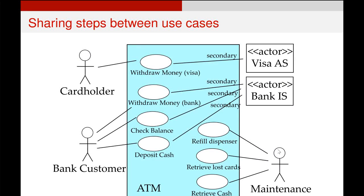The final thing we have to cover about use cases is how you can share steps between use case bodies. If we go back to our example ATM use case diagram, which you can see on the screen now, we can see a few of these steps might share beginning steps. For example, getting a bank customer to check their balance or withdraw money will always have the PIN authentication step, so it doesn't make sense to have those identical steps in every single different use case — it just ends up using more ink and more space on the page.